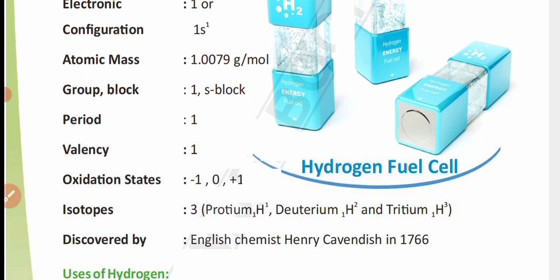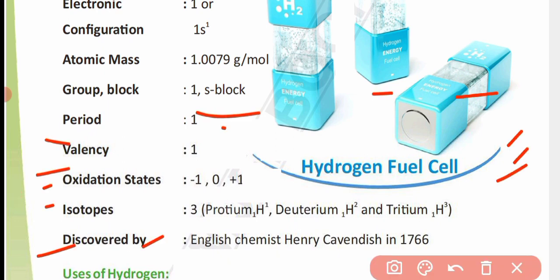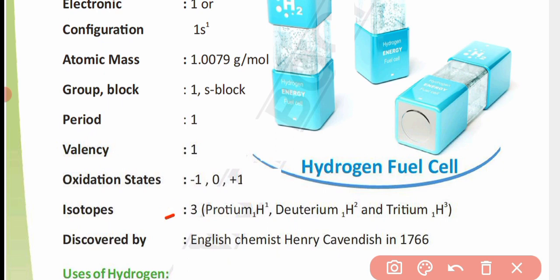Its oxidation states are -1, 0, and +1. It has 3 isotopes: Protium, Deuterium, and Tritium. Protium has 0 neutrons, Deuterium has 1 neutron, and Tritium has 2 neutrons.